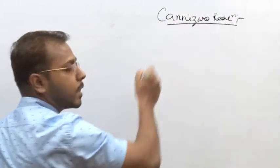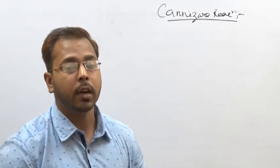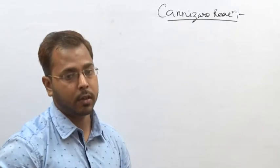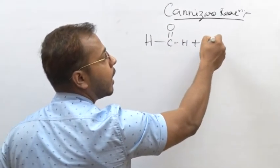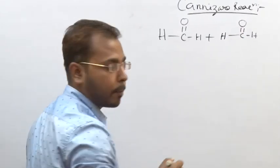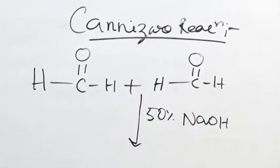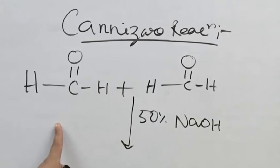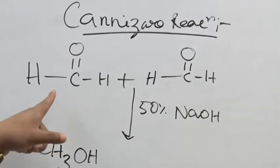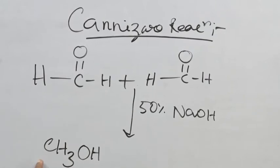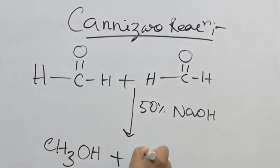In the Cannizzaro reaction, those aldehydes will respond which do not contain any type of alpha hydrogens — like formaldehyde. Formaldehyde is HCHO. We take another HCHO molecule, and if we give 50% base NaOH or KOH, then one molecule of formaldehyde will be reduced and it will form methanol, because formaldehyde has one carbon so when reduced it forms a one-carbon alcohol.